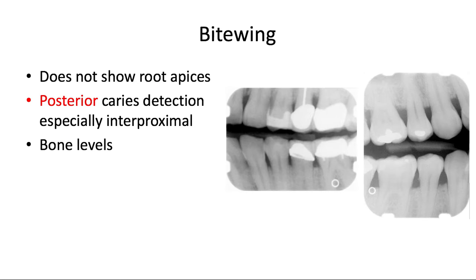The bite wing, by contrast, does not show root apices. It focuses more on the crowns and alveolar bone height. Bite wings are usually better for posterior caries detection, especially between teeth, and for checking bone levels and calculus deposits. Bone levels are fairly accurate on bite wings because they're taken in a parallel direction — periapicals come at more of a vertical angle, so bone levels aren't quite as reliable on PAs. You can also see radiopaque specs indicating calculus deposits. Bite wings are usually exposed horizontally, but can be vertical as well.